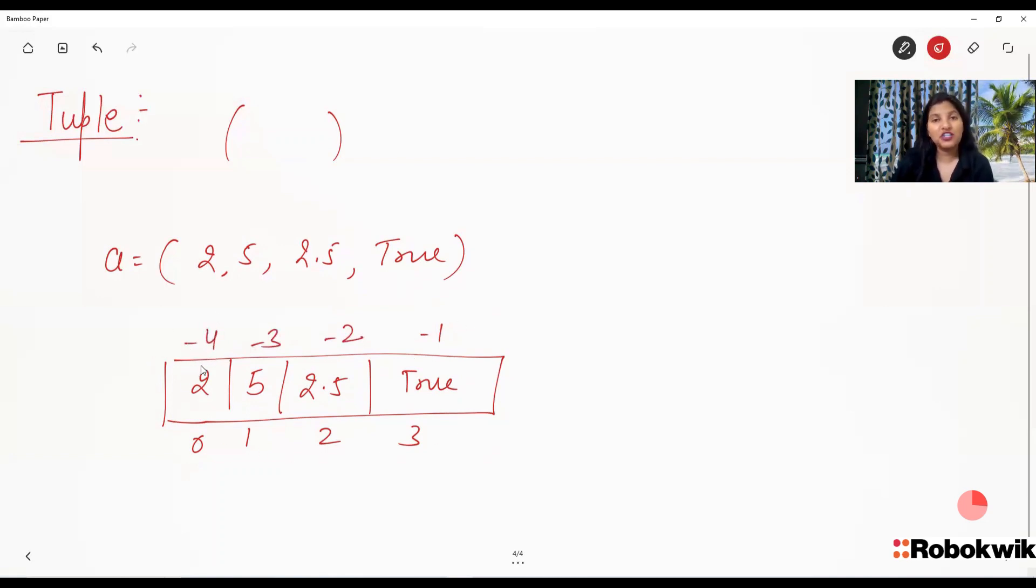Now, if you need a total value, then you can print a simple. If you only need 5 out of this a, then you can directly use indexing. So you can use a of 1 or a of minus 3, which will return 5. Suppose you only need a true value, then you can use a of minus 1 and so on.